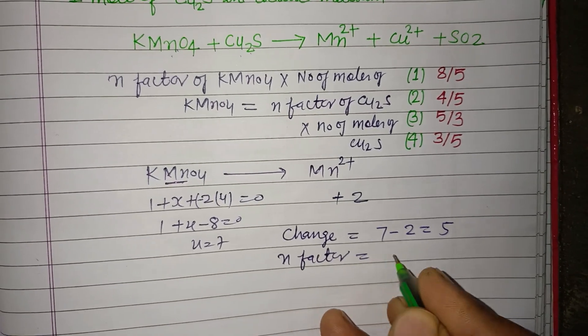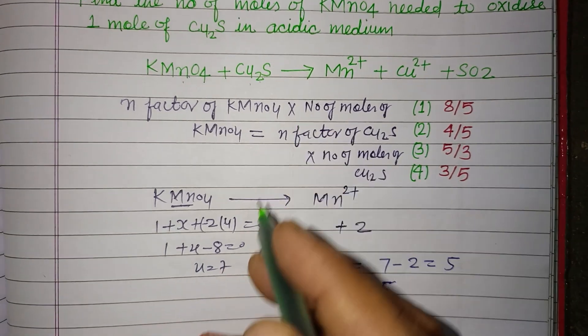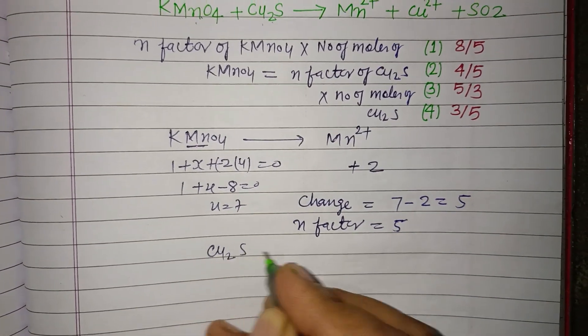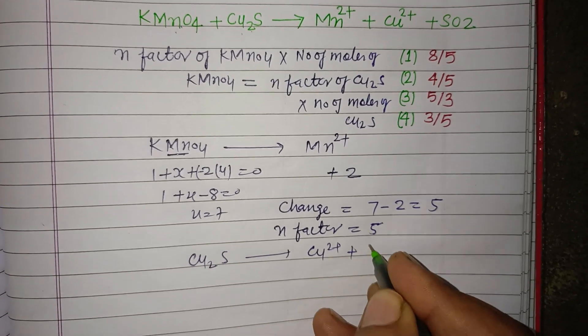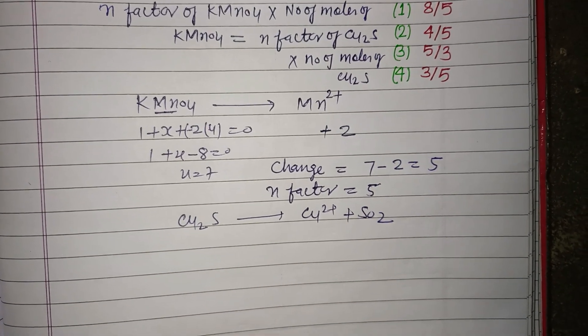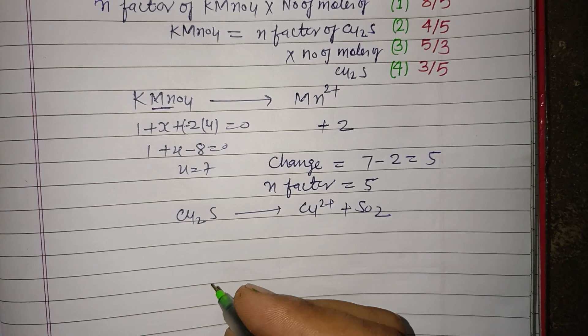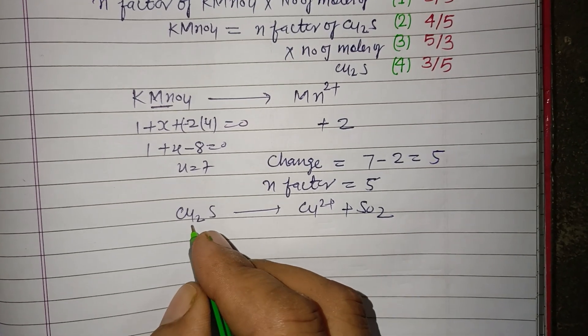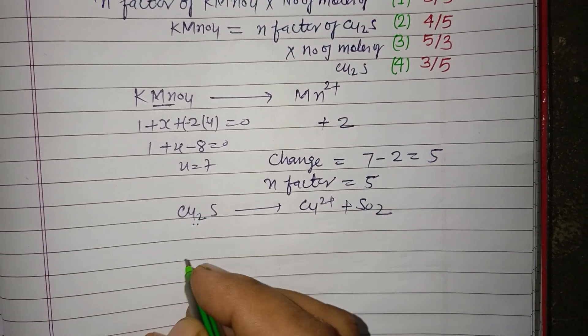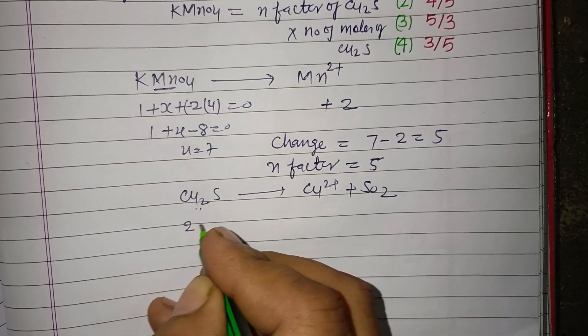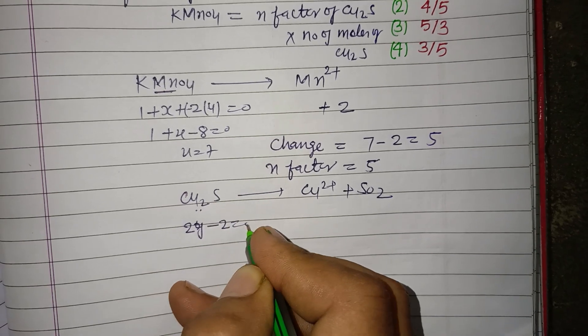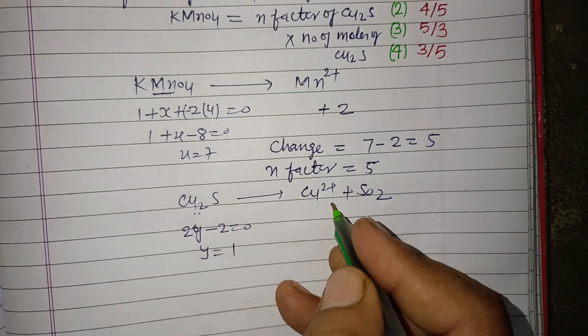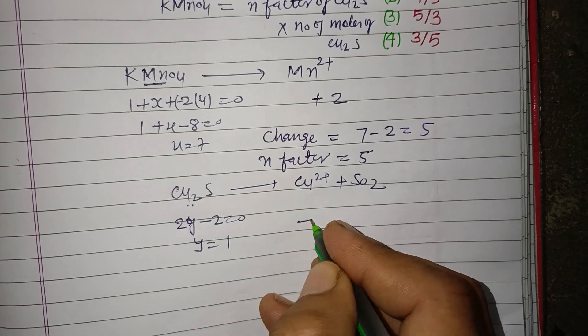7 - 2 = 5, so the n-factor is 5. The n-factor of KMnO4 is 5. Now, Cu2S changes into Cu²⁺ plus SO2. Here, in Cu2S, copper is +1: 2y - 2 = 0, so y = 1.